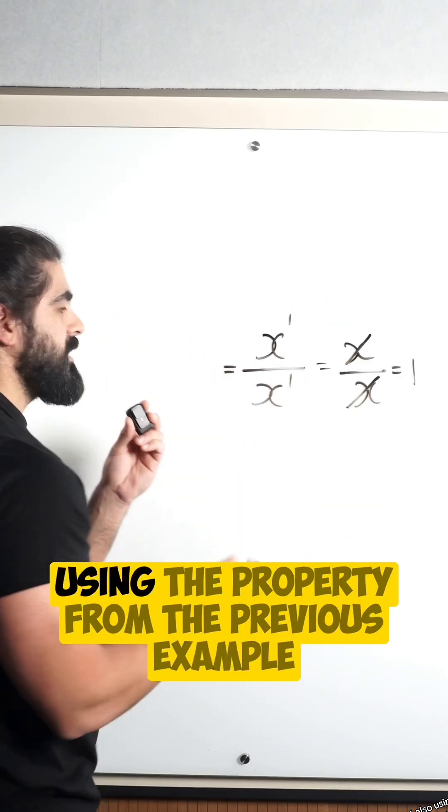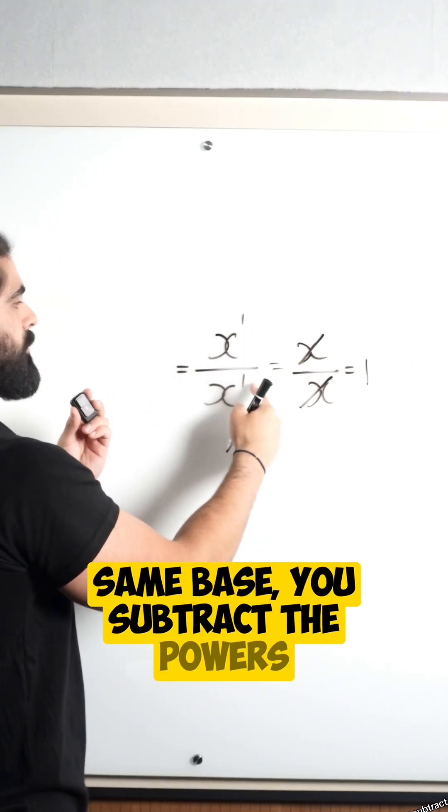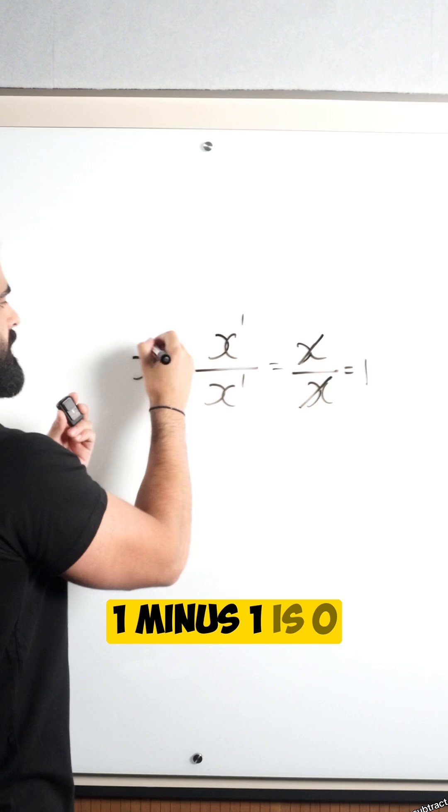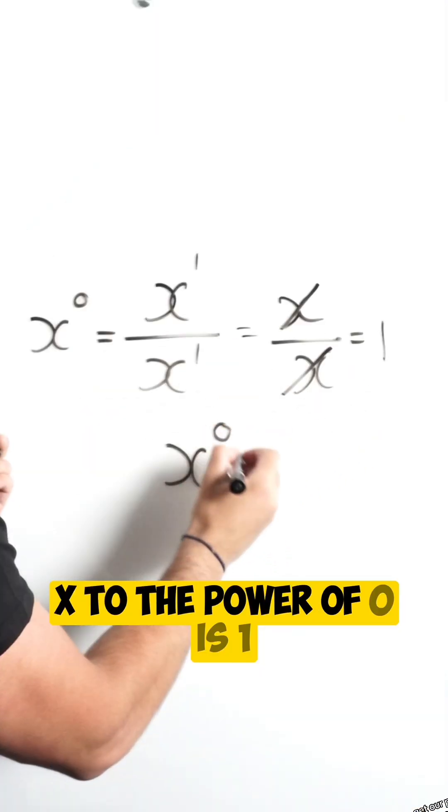But also using the property from the previous example, when you divide two numbers with the same base, you subtract the powers. One minus one is zero. And there guys, we get our property of x to the power of zero is one.